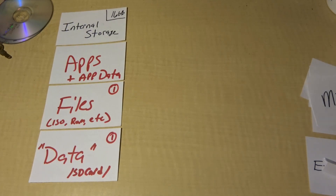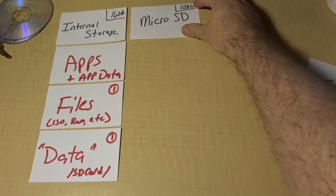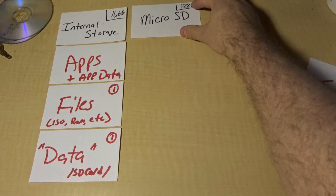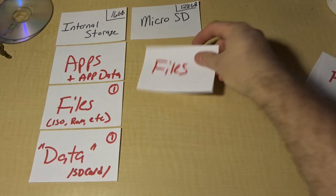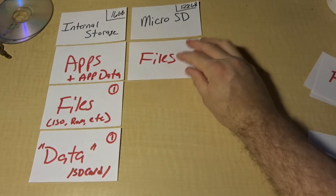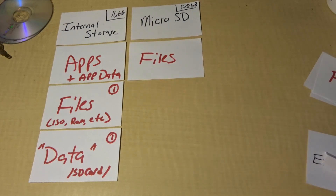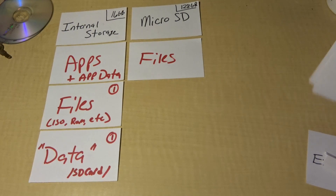Let's say you install a nice fat 128 gigabyte micro SD card. Well, out of the box it comes in as portable storage, so you can put files on it. And maybe, but probably not, you might be able to install some apps on it. But for the sake of argument, let's say it's purely file storage.